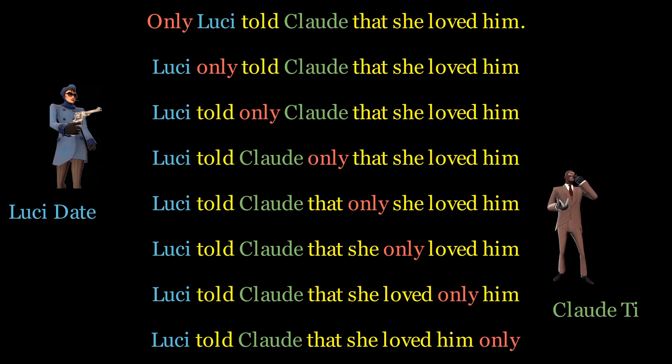Without positional embeddings, the transformer model would not have a way to differentiate between words with similar content but located at different positions in the sequence.